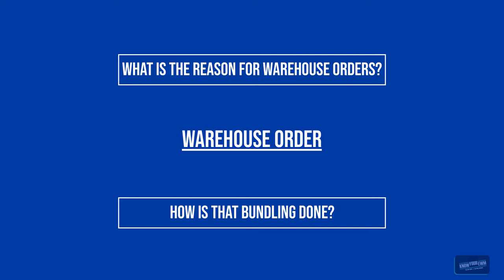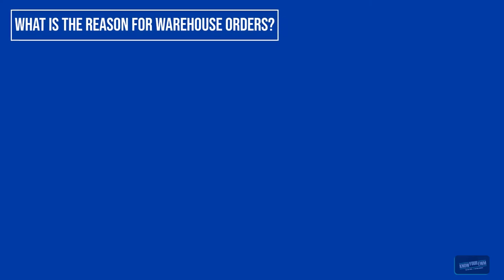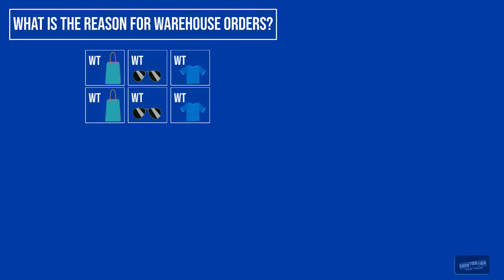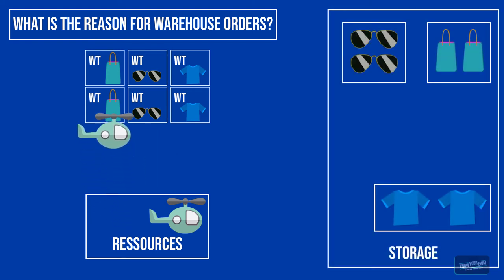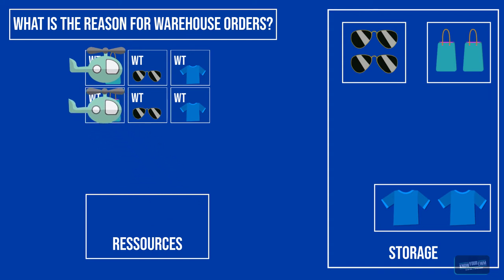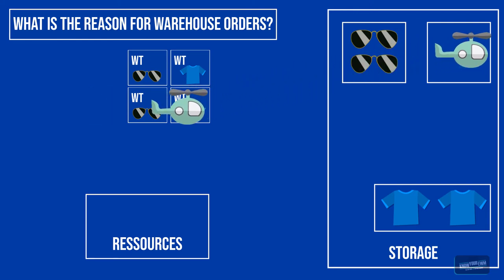Let me answer them for you. In order to understand the reason for warehouse orders, you have to understand that EWM doesn't assign multiple warehouse tasks to resources. So in order to pick items for an outbound delivery order, the user would have to pick each piece individually, with no form of optimization while walking through the warehouse.